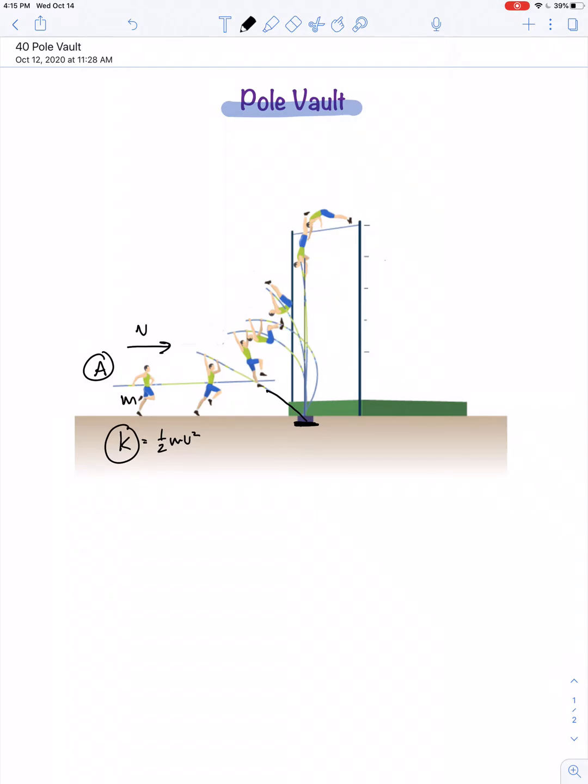So as the pole becomes more and more flexed, then the pole vaulter loses this velocity and the kinetic energy is transformed into potential energy. In fact, for a moment, the pole vaulter is nearly at rest here at point B, and all of the energy now has been transformed from their kinetic energy into the elastic energy of the flexed pole.